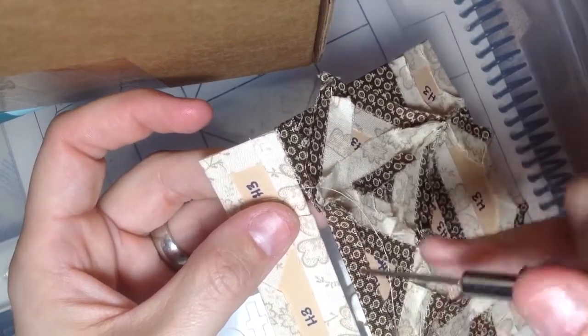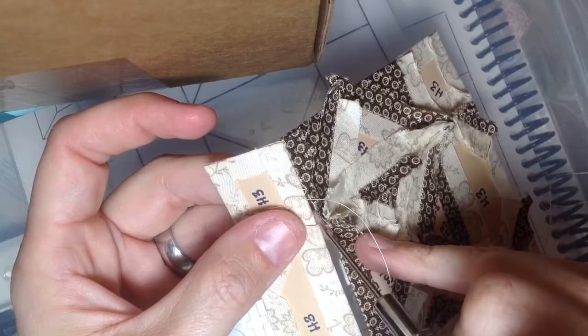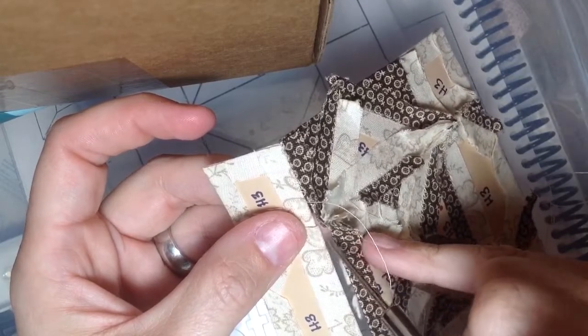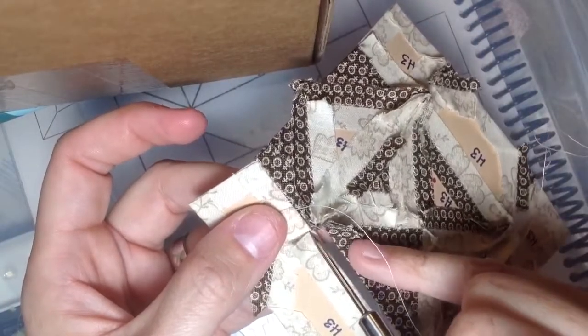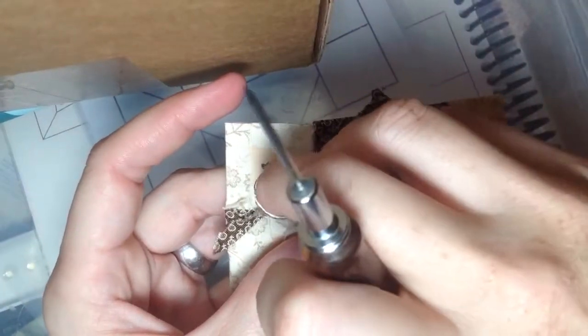And so I'm going to take a couple stitches diagonally across here to minimize that space, and then a couple stitches diagonally across here, and that essentially will pull this closed.